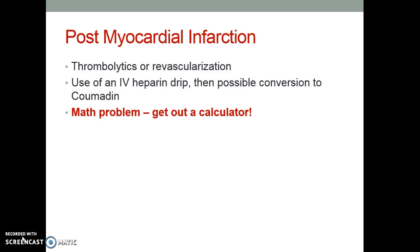Post-MI, you may see thrombolytics or revascularization used. It's possible that someone may go onto a heparin drip with possible conversion to Coumadin. If somebody has a pulmonary embolus, you're going to see heparin or Lovenox used with conversion to Coumadin.